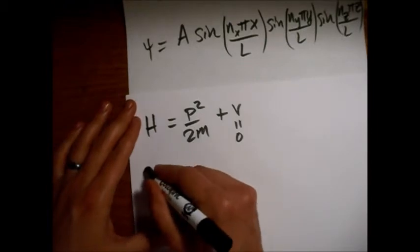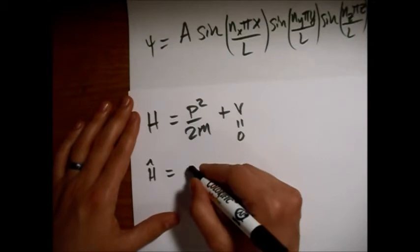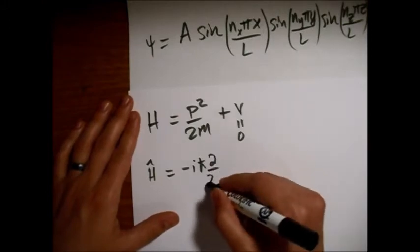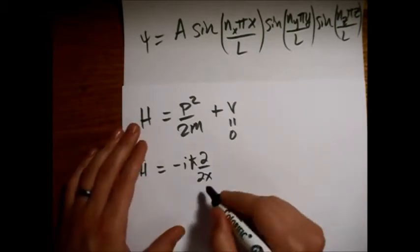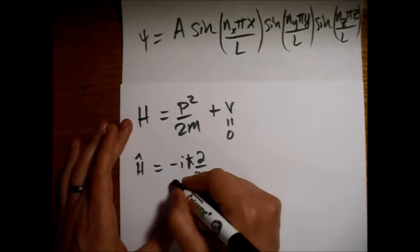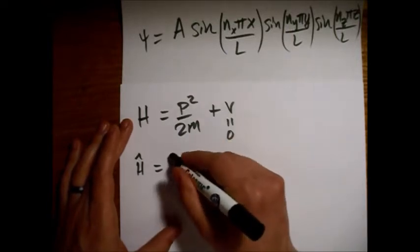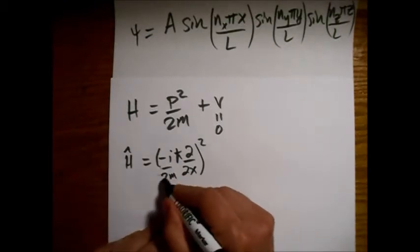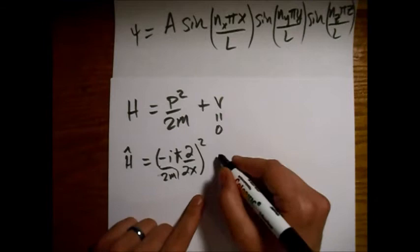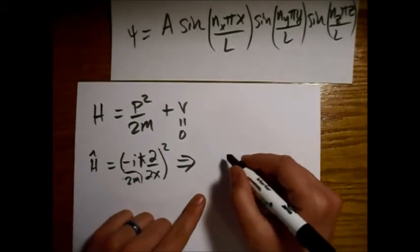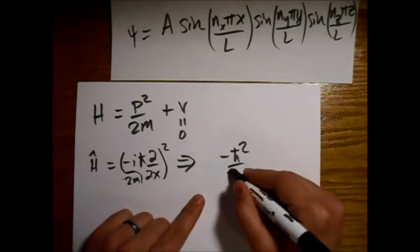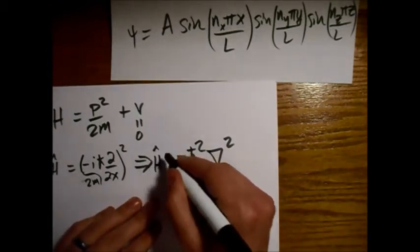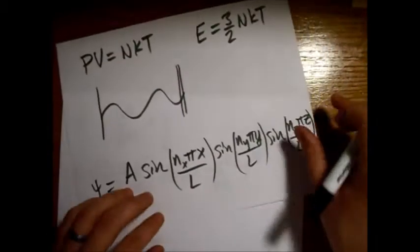So our Hamiltonian operator, the p is minus i h bar d/dx, like this in one dimension. But in this, there's a 2m, and this is squared. I kind of didn't write this particularly clear, because this is outside... but in three dimensions, basically, we end up with minus h bar squared over 2m times the Laplacian.